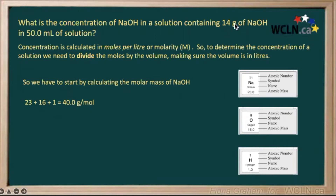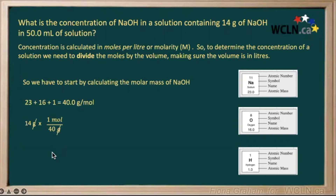Now let's convert our 14 grams to moles using this information. If we multiply our 14 grams by our conversion fraction — moles on the top, grams on the bottom — so that our grams will cancel out, giving our final answer in moles, we get 14 times 1 divided by 40, giving us 0.35 moles.